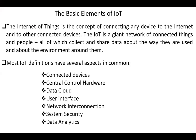Hello, everyone. Today, our topic is the basic elements of IoT. The Internet of Things is the concept of connecting any device to the Internet and to other connected devices. The IoT is a giant network of connecting things and people, all of which collect and share data about the way they are used and about the environment around them. Most IoT definitions have several aspects in common.